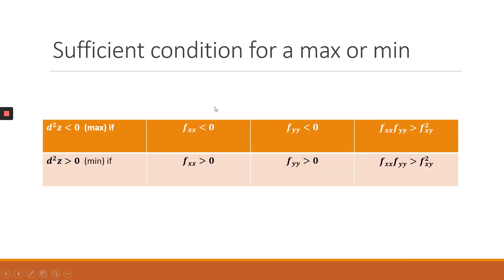We are starting with a quick recap of the sufficient condition for a maximum or minimum that we established. The condition states that to conclude for a maximum, you need the direct partials to be less than zero, as well as the product of the direct partials to be greater than the product of the cross partials.